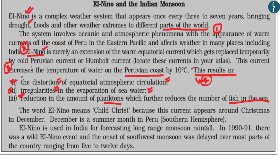Those are the three main effects of El Niño from the Class 11th NCERT book. Two additional aspects — El Niño's effect on the Indian monsoon and its relationship with Southern Oscillations — are also important, though we won't go into depth here. You can read the relevant NCERT chapters for those topics.